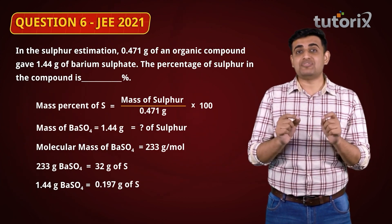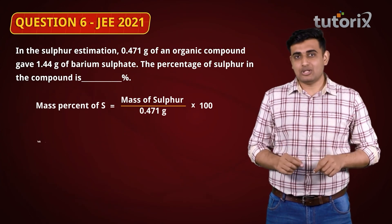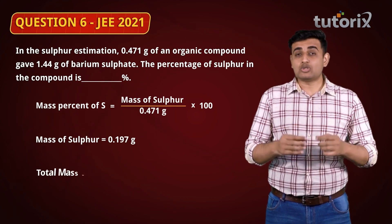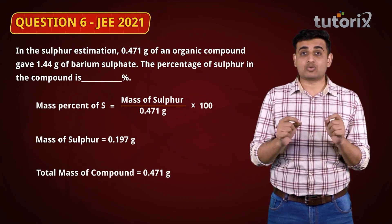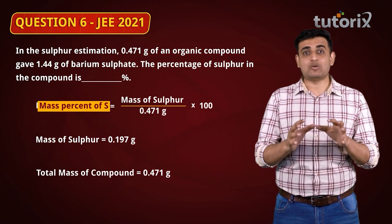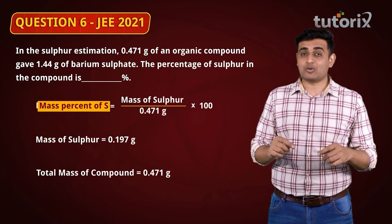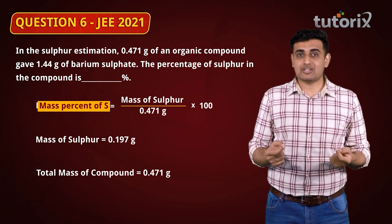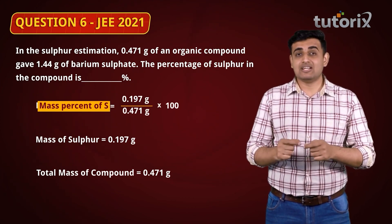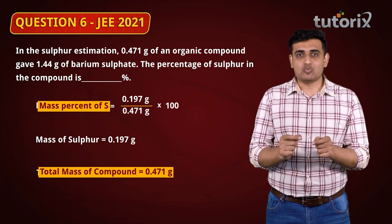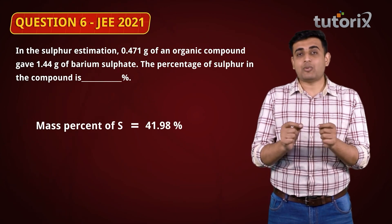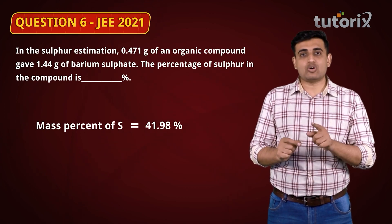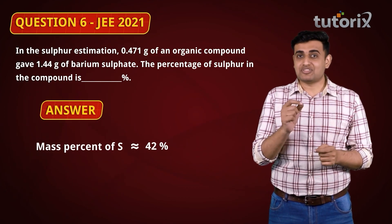Now with mass of sulphur = 0.197 grams and total mass of the organic compound = 0.471 grams, mass percentage of sulphur = (0.197 / 0.471) × 100 = 41.98%, which rounds to 42%. The correct answer is 42%.